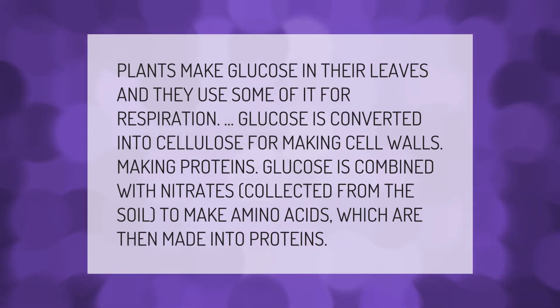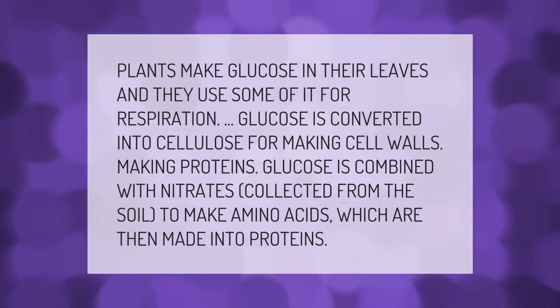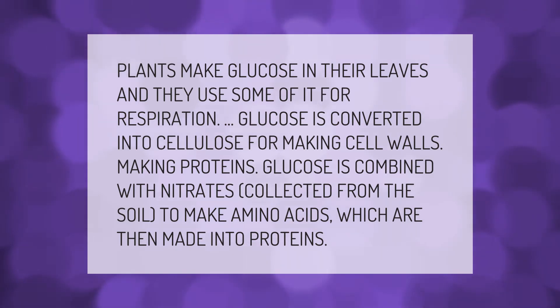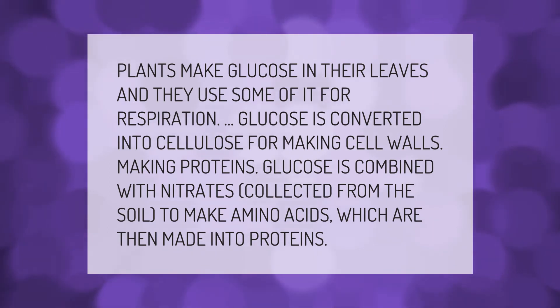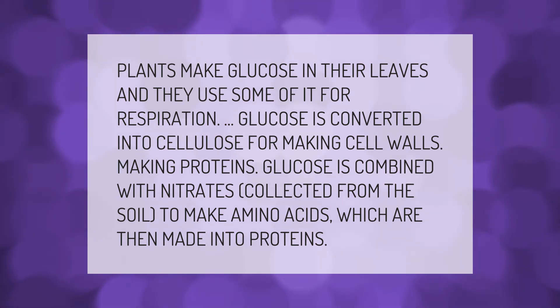Plants make glucose in their leaves and they use some of it for respiration. Glucose is converted into cellulose for making cell walls and for making proteins. Glucose is combined with nitrates collected from the soil to make amino acids, which are then made into proteins.